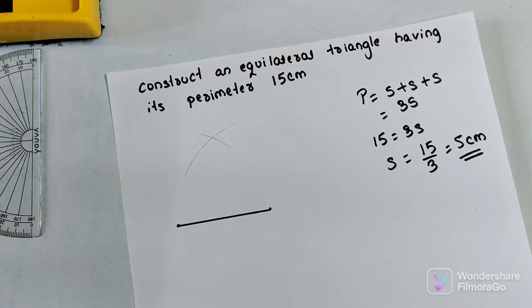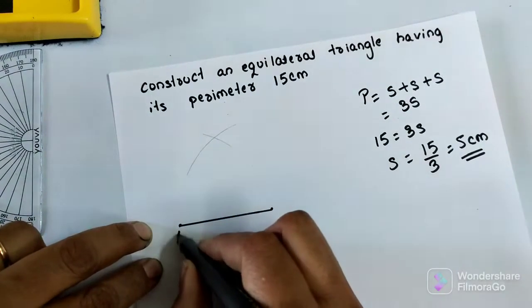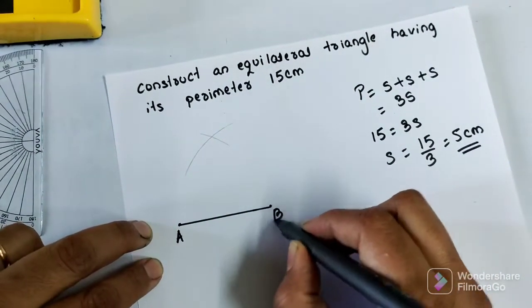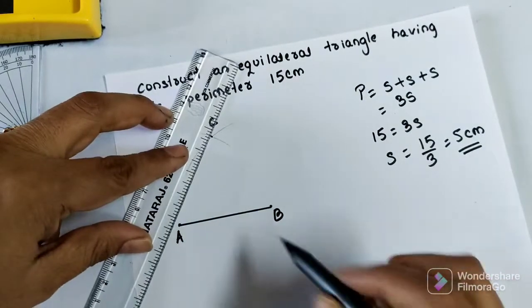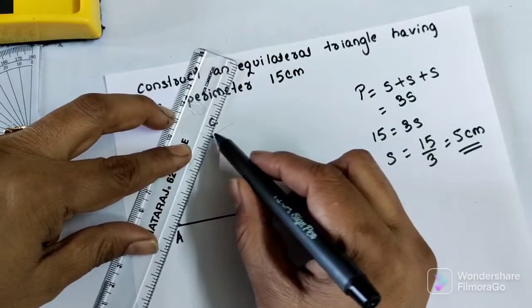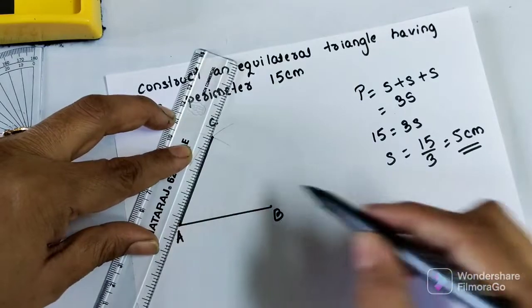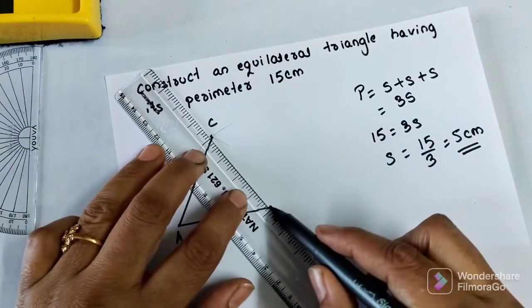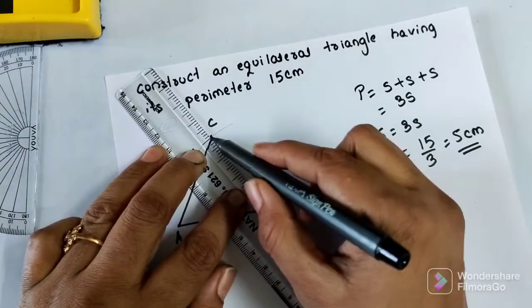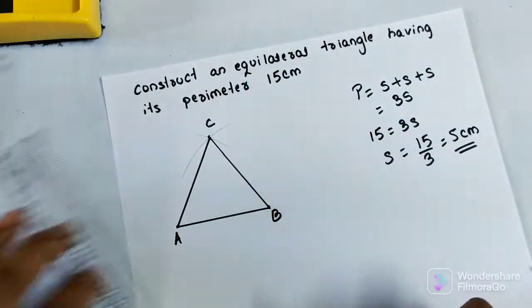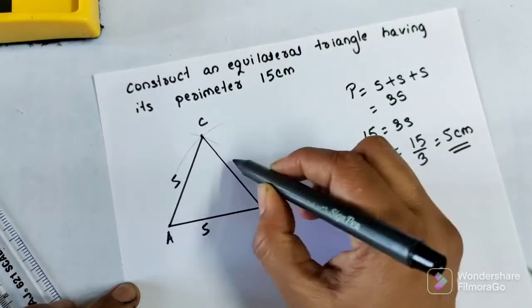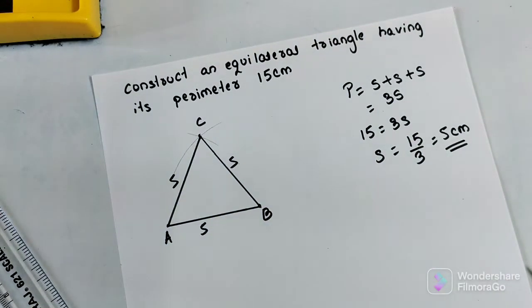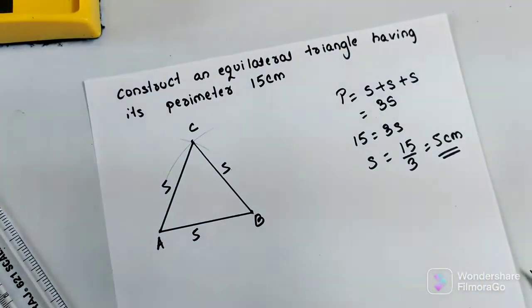So now this if I call A, this I call B and this point here as C. Now if we join this point on both the ends like this if we join. So now we get this equilateral triangle with the 5 cm. So this is 5, this is 5, this is 5. We call it as an equilateral triangle with a perimeter as 15 cm.